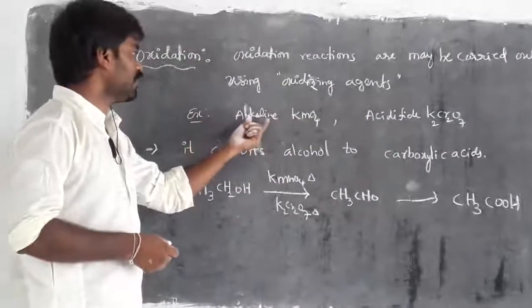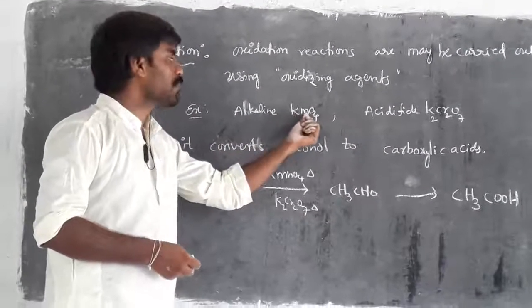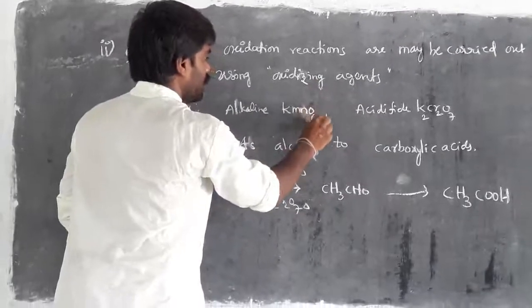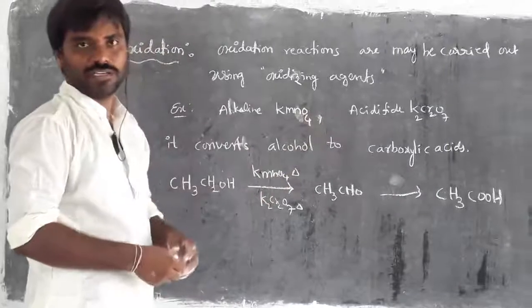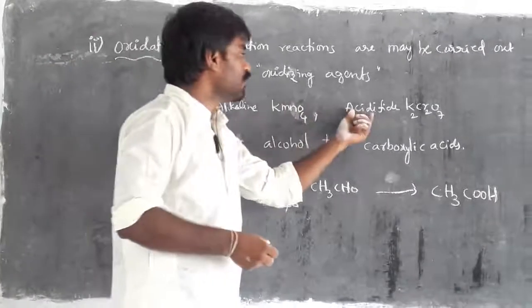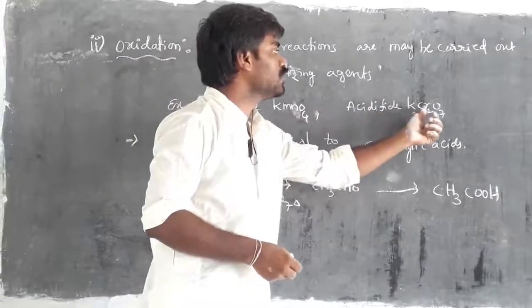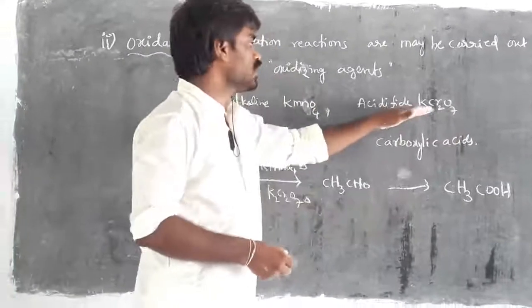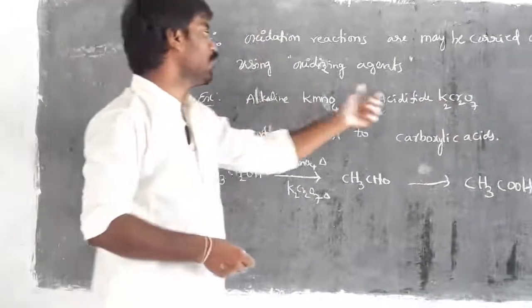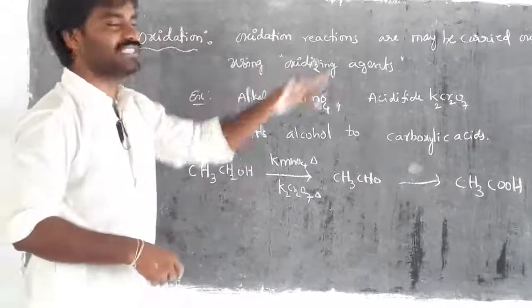Oxidizing agent examples are: alkaline KMnO4 — potassium permanganate — with alkaline nature, meaning base nature. Then one more type of oxidizing agent is acidified K2Cr2O7 — potassium dichromate. These two compounds are majorly used in the laboratory as oxidizing agents.